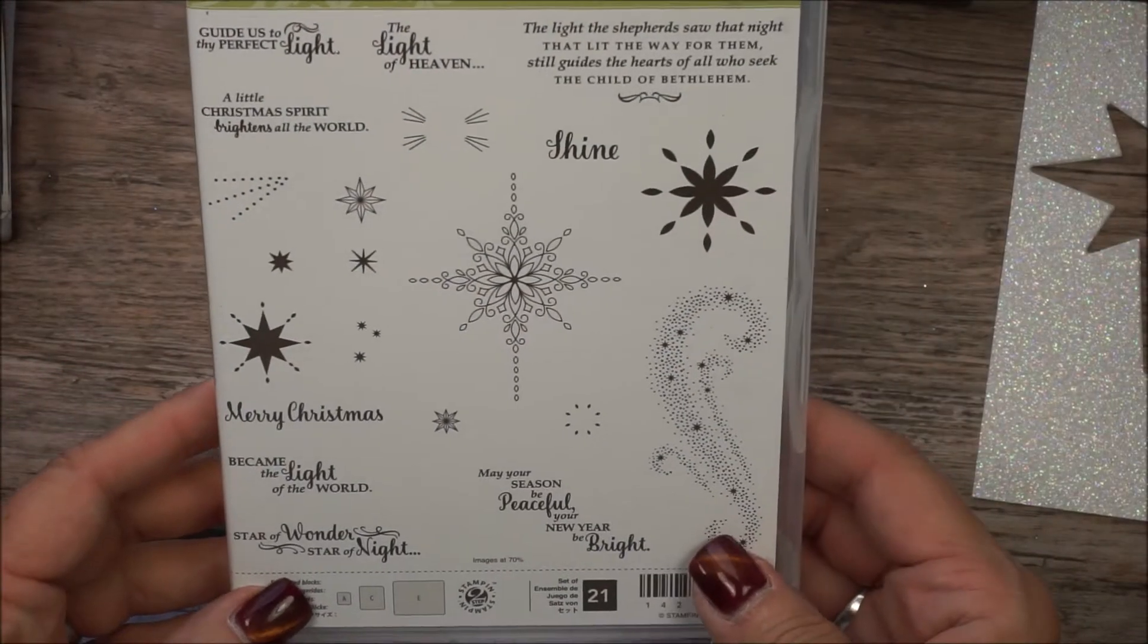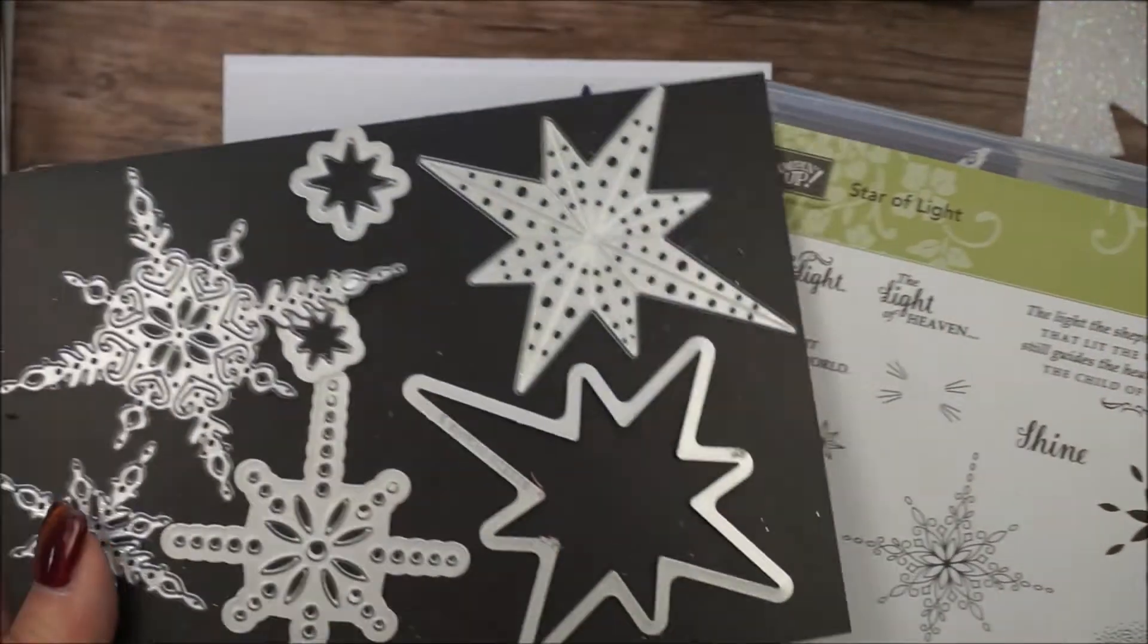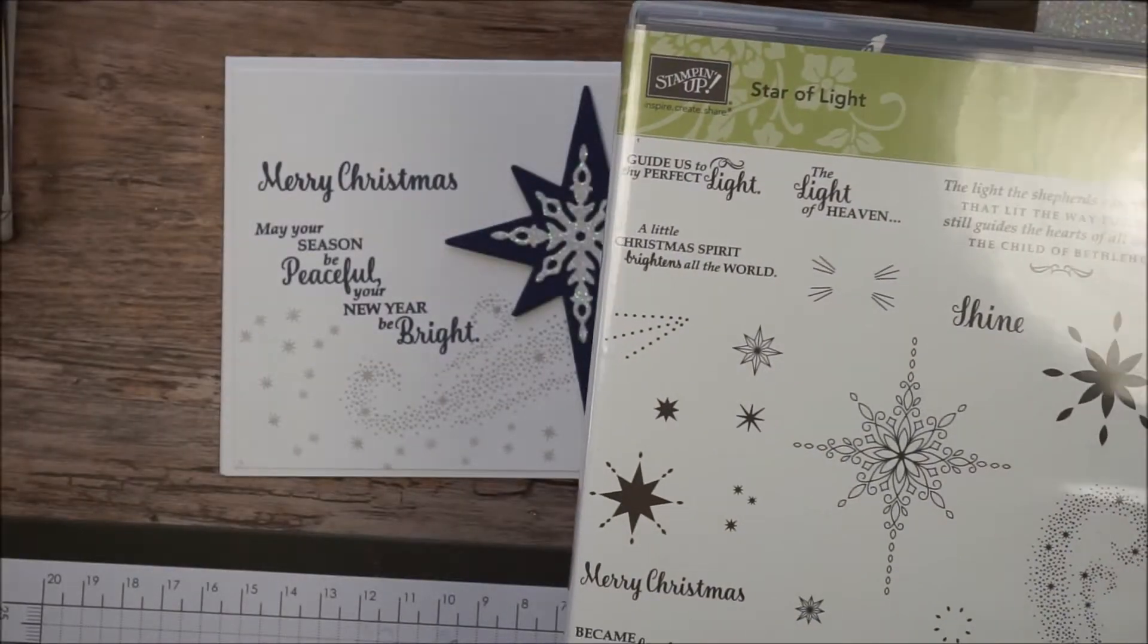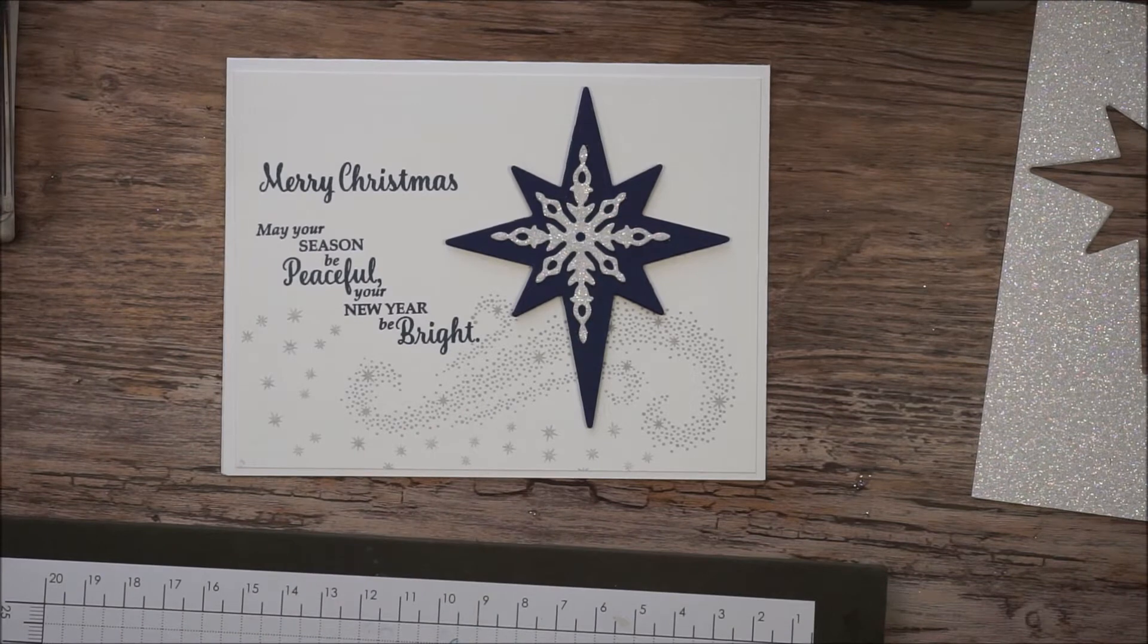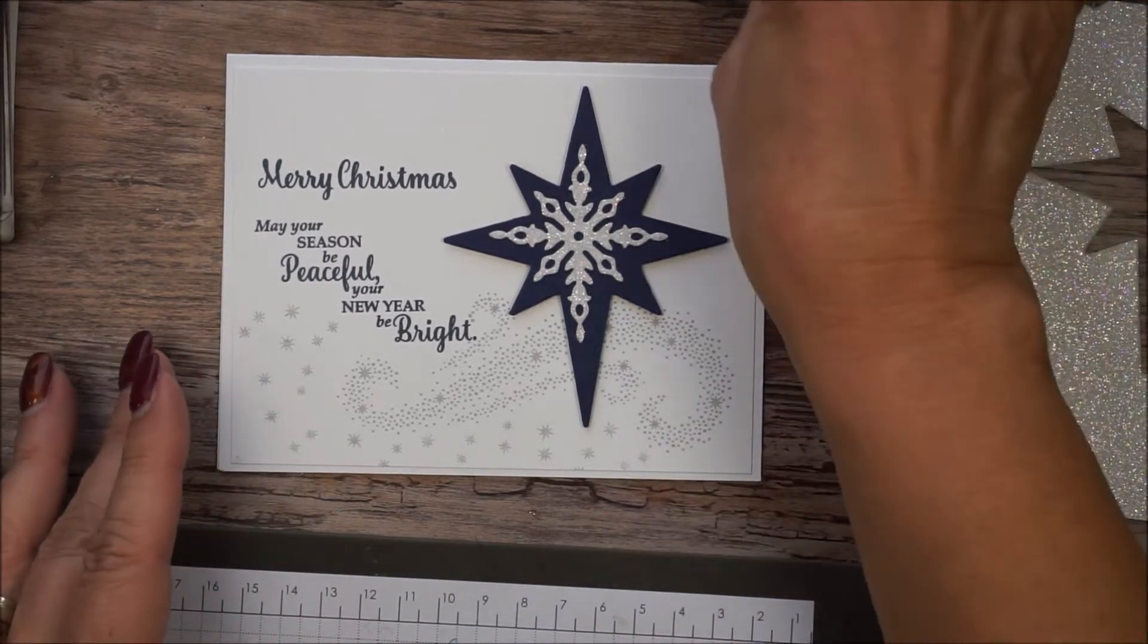I'm using the new Star of Light stamp set with the matching framelits. This is sold as a bundle, so you save 10% when you buy them as a bundle. You're going to need the framelits. You cannot create these gorgeous cards with snips alone. I'm just telling you. I'm going to give you a few tips on this video.